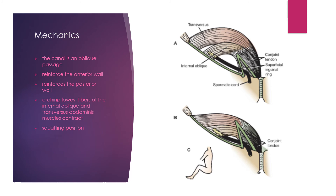The contents of the inguinal canal in males is the spermatic cord; in females it is the round ligament of the uterus. Regarding the mechanics that prevent abdominal organs from passing outwards: the first mechanism is that this is an oblique passage, not a straight one. This obliquity is greater in adults compared to infants, and the deep ring is offset from the superficial ring, so the canal closes under increased abdominal pressure.